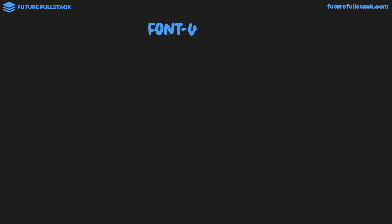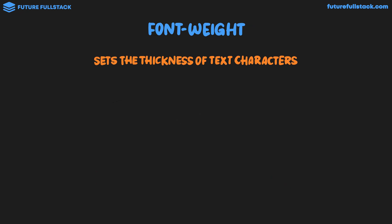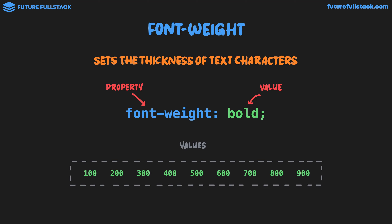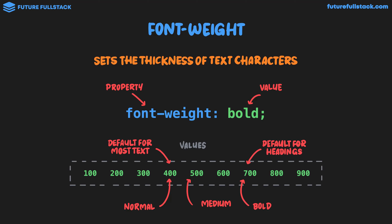The first styling property we're going to look at is font weight. It sets the thickness of text characters. Font-weight is the property, and bold is the value. For font weight, although we can use named values like bold or normal, it's more common to use numerical values, which range from 100 to 900 in increments of hundreds. 400 is considered normal, 500 is medium thickness, and 700 is bold. Normal (400) is the default weight for most text, whereas 700 is the default for headings.